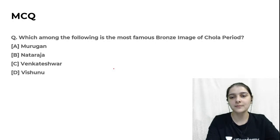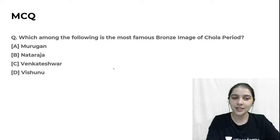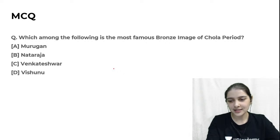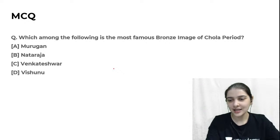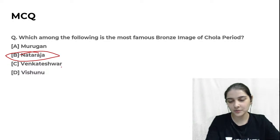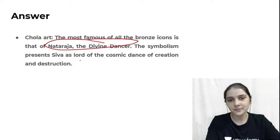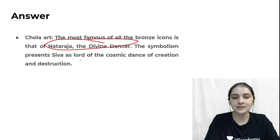Next question: Which amongst the following is the most famous bronze image of the Chola period? Options: Murugan, Natraj, Venkateshwar, Vishnu. Almost everyone has answered B — Natraj — and that is 100% correct. Natraj is the correct answer. The divine dancer Shiva has been envisioned as performing the cosmic dance of creation and destruction.